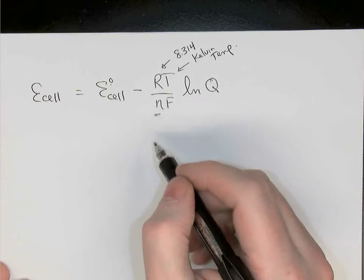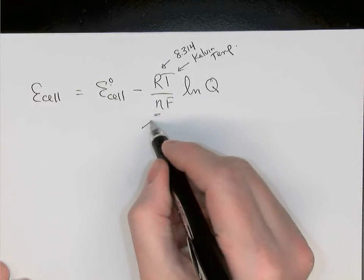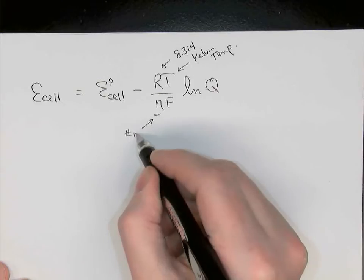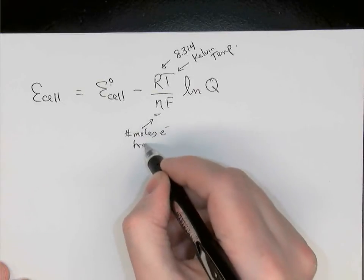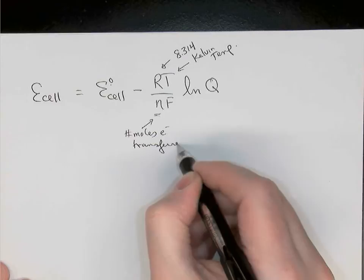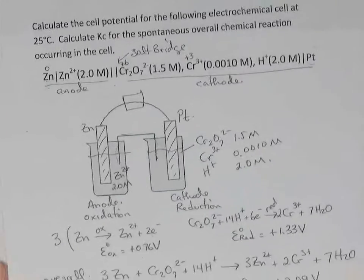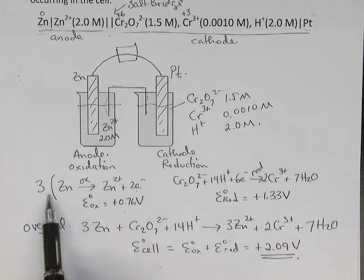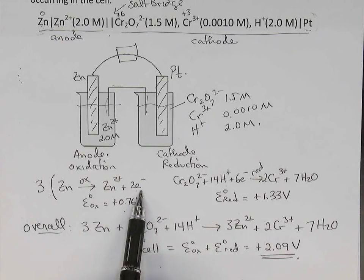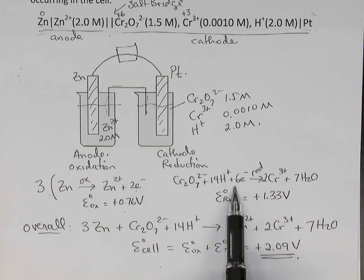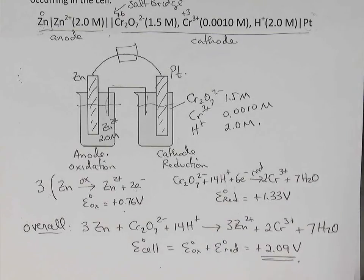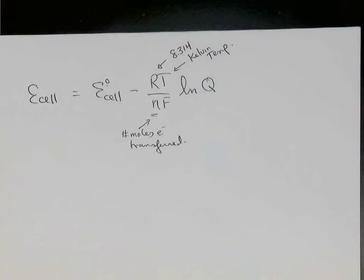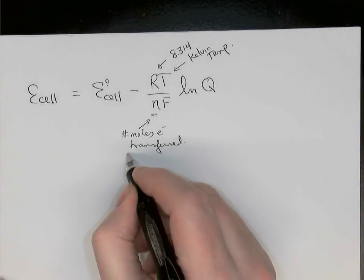N, in the Nernst equation, is the number of moles of electrons that were transferred, moles of electrons transferred, in our reaction. If we look back at this chemical reaction, when we recombined the two half reactions, we multiplied the first equation by 3 to give us 6 electrons lost and 6 electrons gained. Since 6 electrons are lost and 6 electrons are gained, 6 electrons, 6 moles of electrons, are being transferred. So in this example, N is equal to 6 in our example.